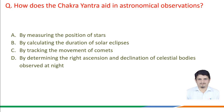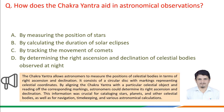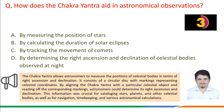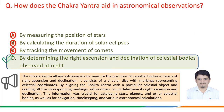The Chakra Yantra allows astronomers to measure the positions of celestial bodies in terms of right ascension and declination. It consists of a circular disk with markings representing celestial coordinates. By aligning the Chakra Yantra with a particular celestial object and reading off the corresponding markings, astronomers could determine its right ascension and declination. This information was crucial for cataloging stars, planets, and other celestial bodies, as well as for navigation, time keeping, and various astronomical calculations. Therefore, the correct answer is option d.